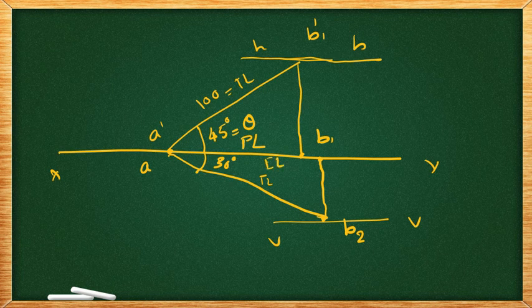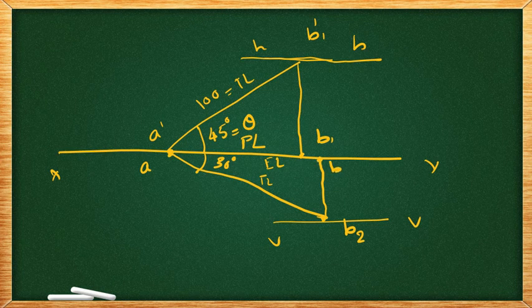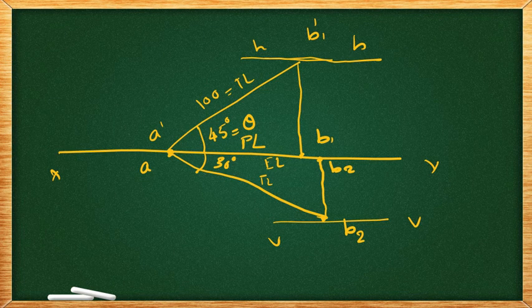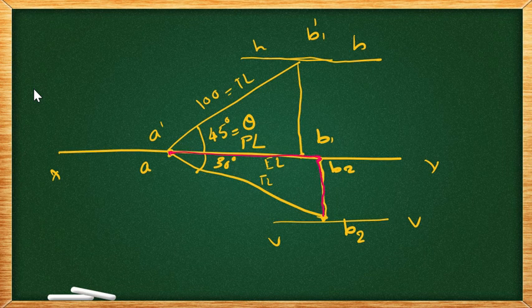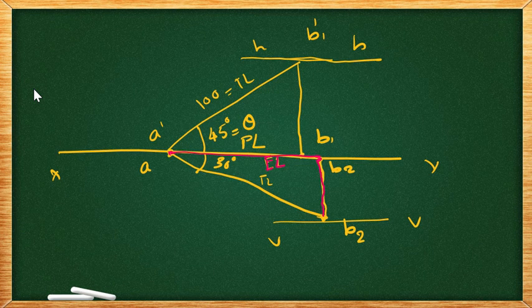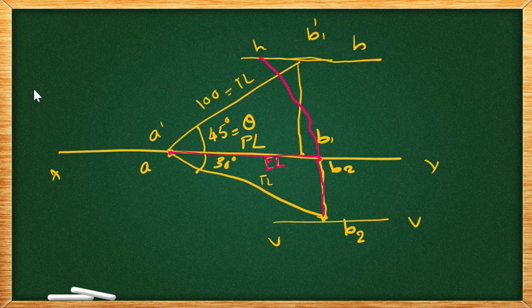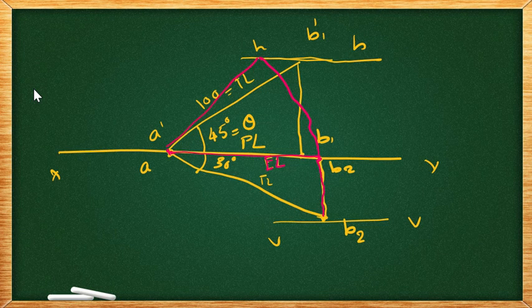That is A to B, B2, the elevation line AB2. We rotate with the center as A, AB2 in the plane, rotating the line parallel to XY. This gives us the required elevation.